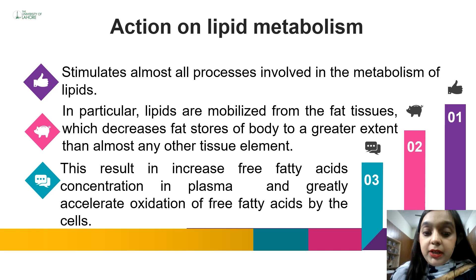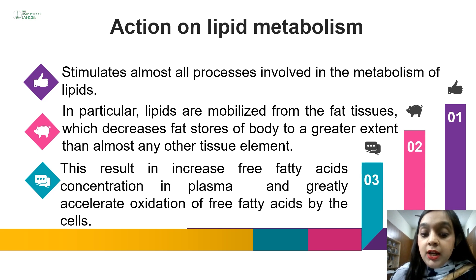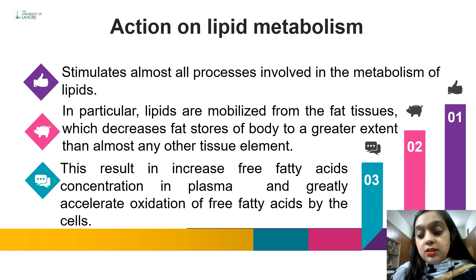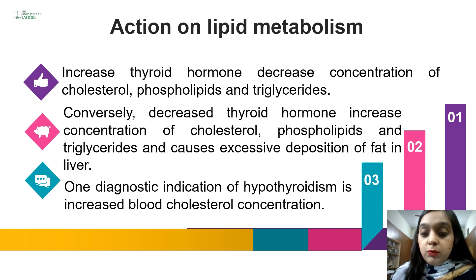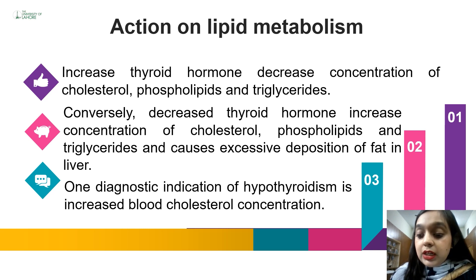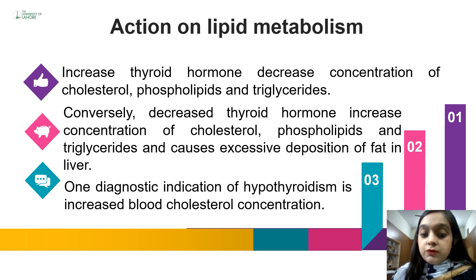Similarly, thyroid hormone stimulates almost all processes involved in lipid metabolism. Lipids are metabolized and mobilized from fat tissues, decreasing fat stores in the body. This increases free fatty acid concentration in the plasma and accelerates their oxidation in cells. Increased thyroid hormone decreases the concentration of cholesterol, phospholipids, and triglycerides. Conversely, in hypothyroidism, decreased thyroid hormone increases concentrations of cholesterol, phospholipids, and triglycerides, causing excessive fat deposition in the liver. One diagnostic indication for hypothyroidism is elevated blood cholesterol.